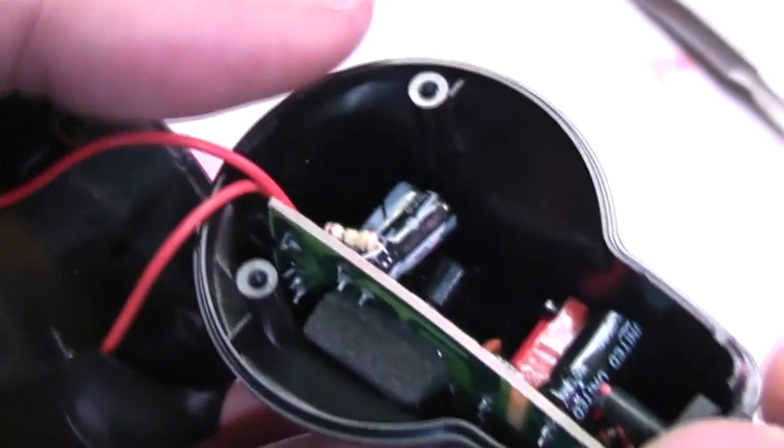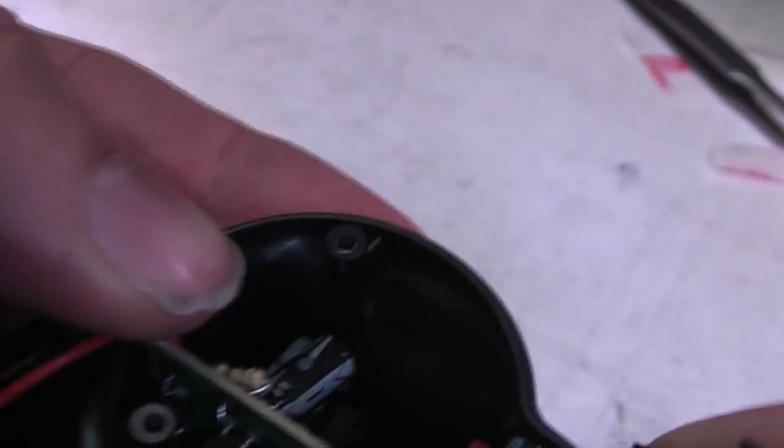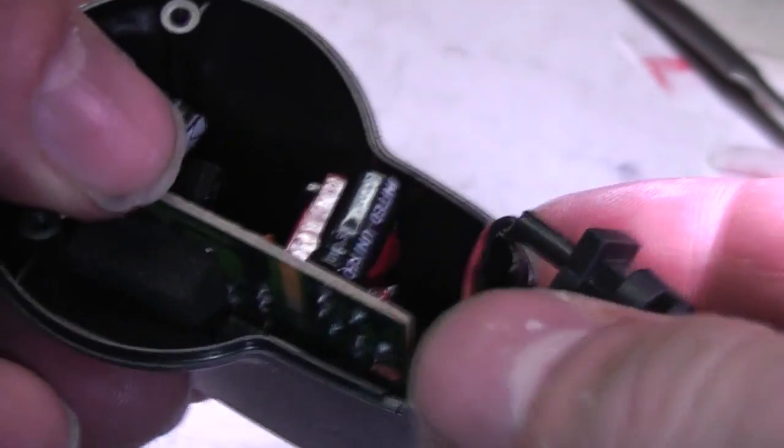Took the screws out, cracked it open. First thing I noticed, the board is just sort of shoved in place with this bit of foam rubber. There are actually two slots either side but they decided they were going to save a fraction of a cent and trim the board a little bit too short to fit the other slot.